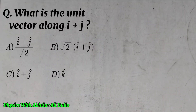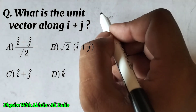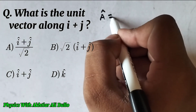The question is: what is the unit vector along i plus j? Option a: i plus j upon under root 2. Option b: under root 2 into i plus j. Option c: i plus j. Option d: k.